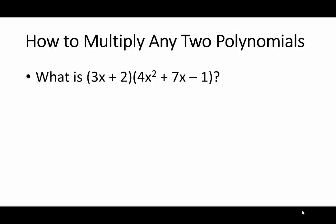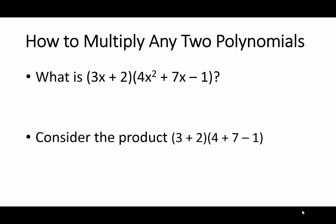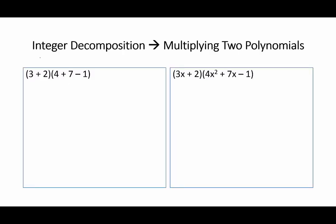How to multiply any two polynomials. What is the product of that binomial and that trinomial? Let us first consider (3+2)(4+7−1): we know this is 5 times 10, equal to 50. Let's see how: 3×4=12, 3×7=21, 3×(−1)=−3; then distribute the 2: 2×4=8, plus 14, minus 2. This equals 50. This works because it is based on the distributive property.